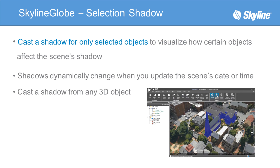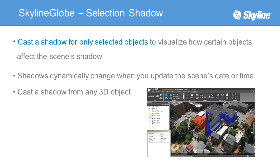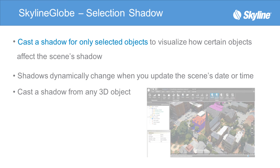Selection Shadow highlights the shadow of selected objects so you can visualize how those shadows affect the terrain. This can be applied to any 3D object and updated when you select a new object.